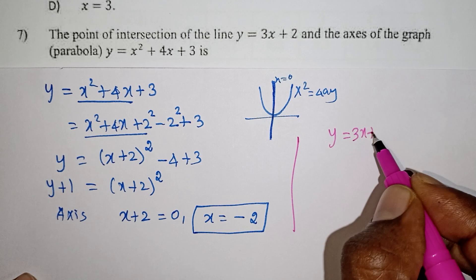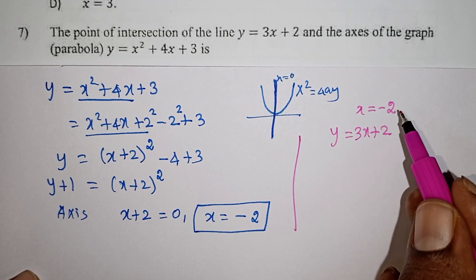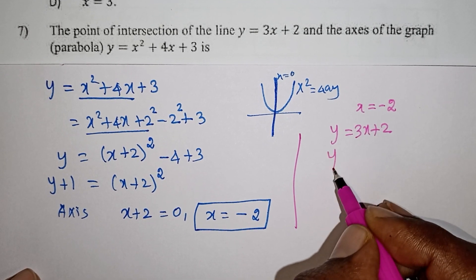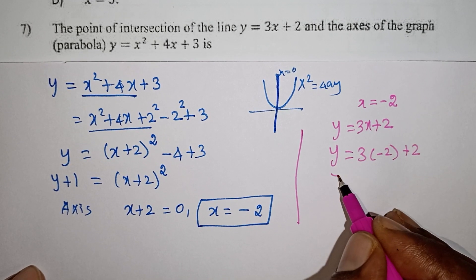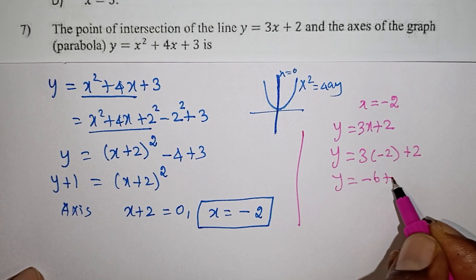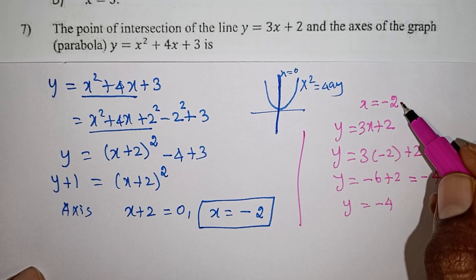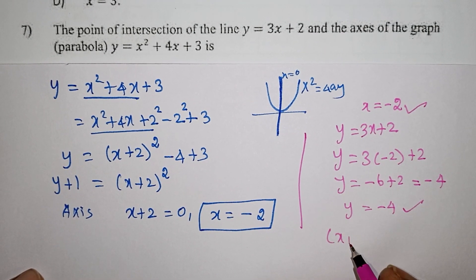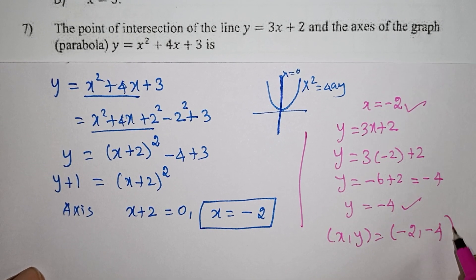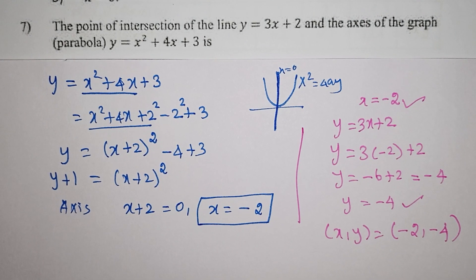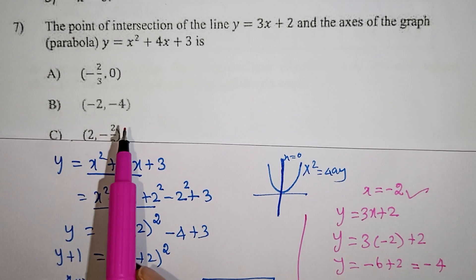So x equals minus 2. Substituting into y equals 3x plus 2: y equals 3 times minus 2 plus 2, which is minus 6 plus 2, so y equals minus 4. Therefore x equals minus 2 and y equals minus 4. The point of intersection with the axis of the parabola is (minus 2, minus 4) — the second option.